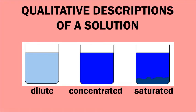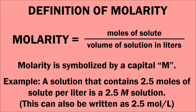We can describe a solution in a qualitative way without using any numbers. We can say that a solution is dilute, concentrated, or even saturated. These terms simply describe in a relative way whether we have a little or a lot of solute. Saturated means we have the maximum amount of solute that can possibly be dissolved in that particular volume of solvent.